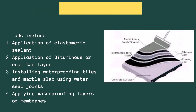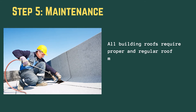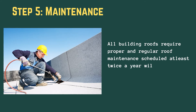Step 5: Maintenance. Lastly, we not only need to stop concrete leakage but also prevent it from happening again. This can only be achieved by proper and regular roof maintenance. A scheduled maintenance at least twice a year is recommended. It is advisable to call a commercial roofing partner to monitor and study the concrete roofing structure and bring up solutions to all concrete roof leakage issues.